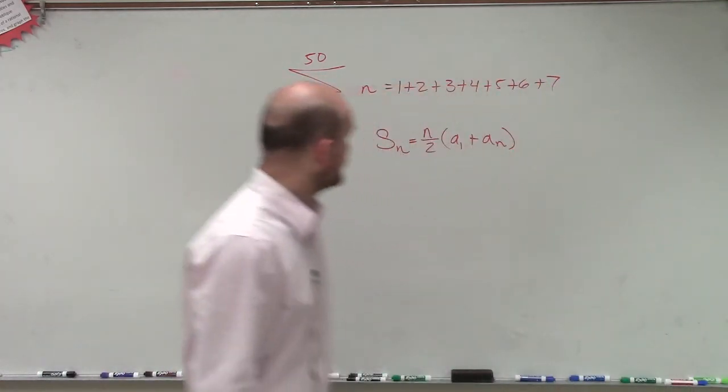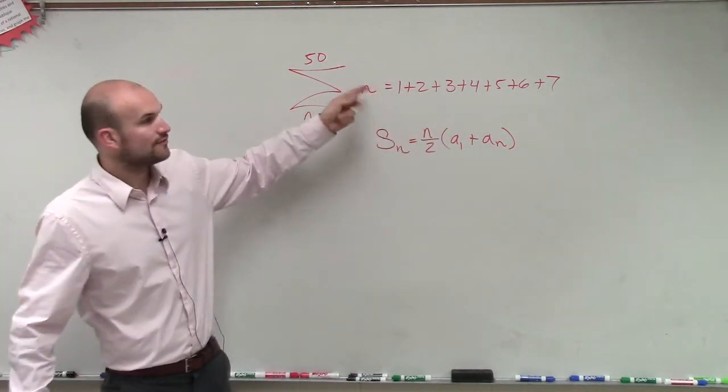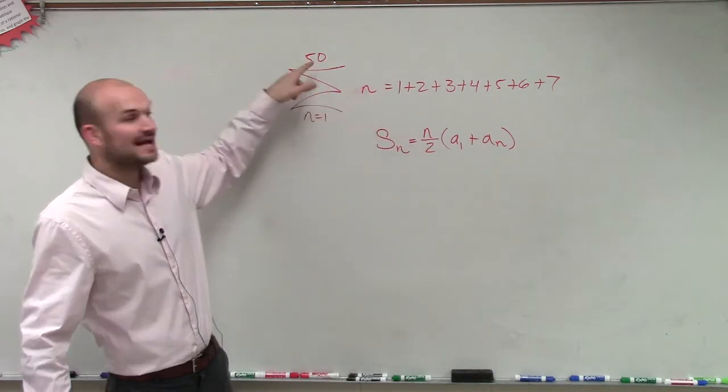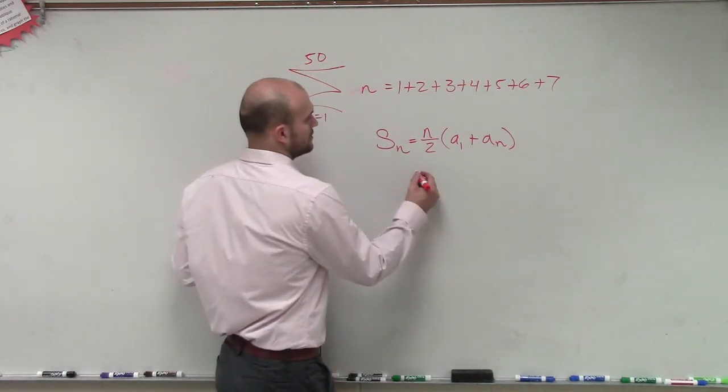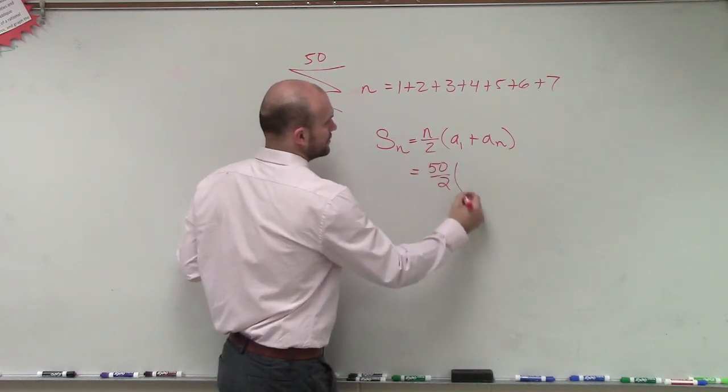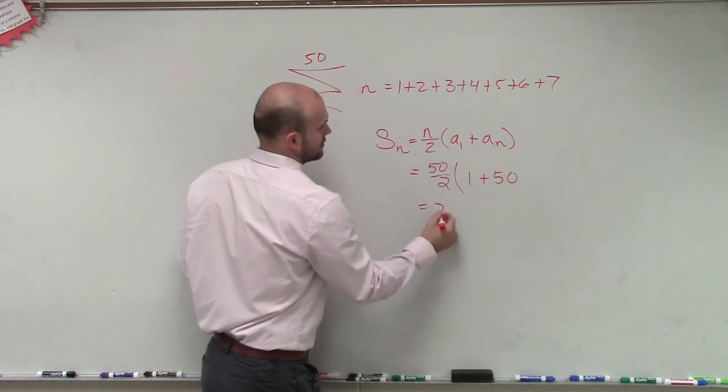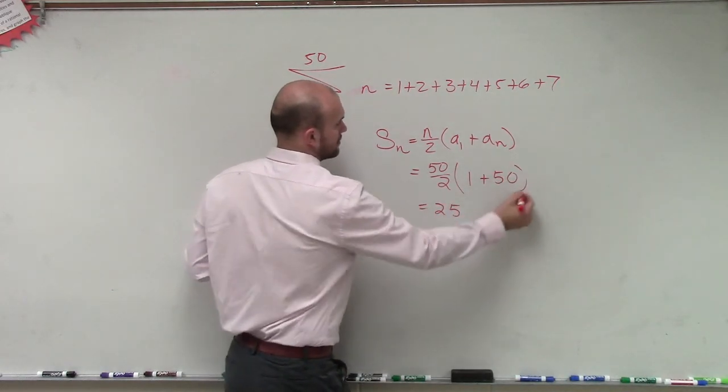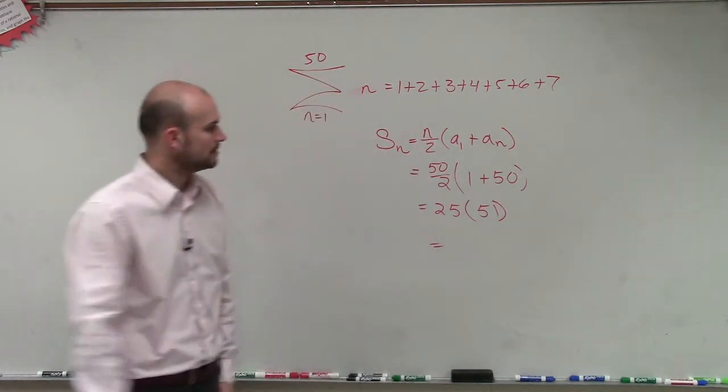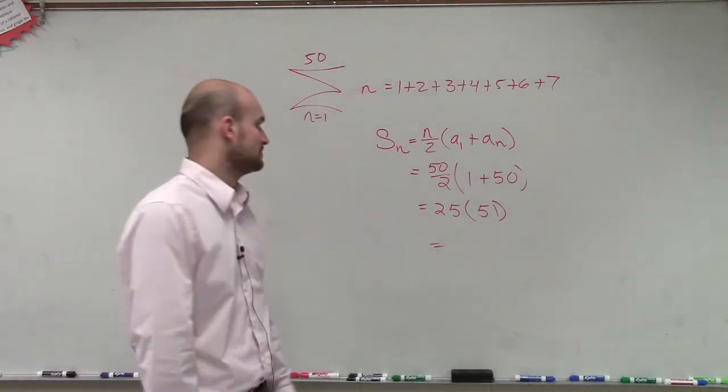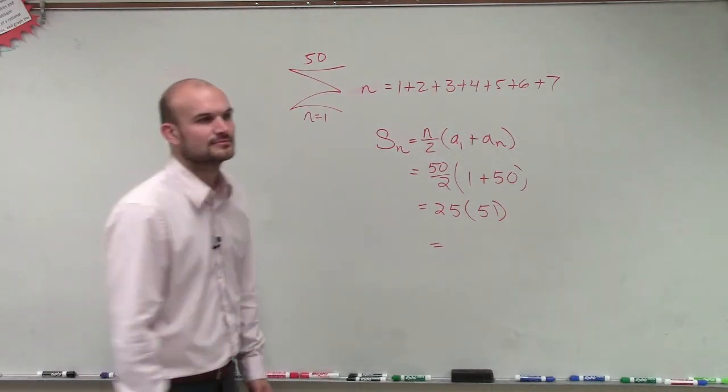So first thing I need to do is figure out what a sub 1 is. Right? That's 1. So the formula is just 1, and then n is going to be 50. So we have 50 over 2. All right. Now I will need your calculator help for that one, because I don't want it. It still is that early morning rush. 1,275.